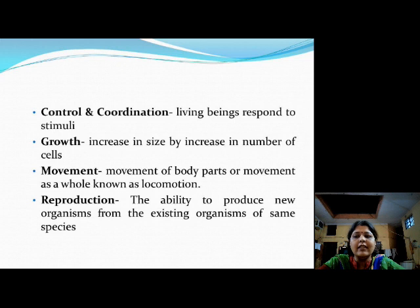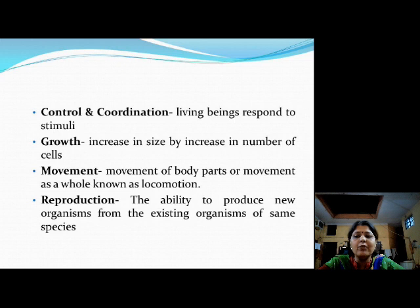The next physiological process is movement — that is the movement of body parts, exhibited by plants as well as animals. One thing particular to animals but not seen in plants is locomotion. Locomotion is when we are moving as a whole. Plants are stationary; they cannot move as a whole, so they show only the signs of movement but not locomotion. Whereas animals change their place with respect to time, and that is known as locomotion.